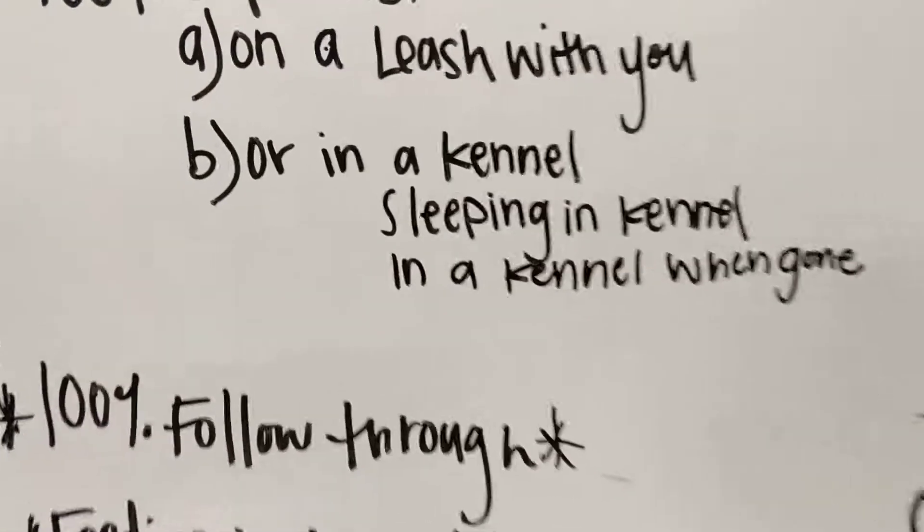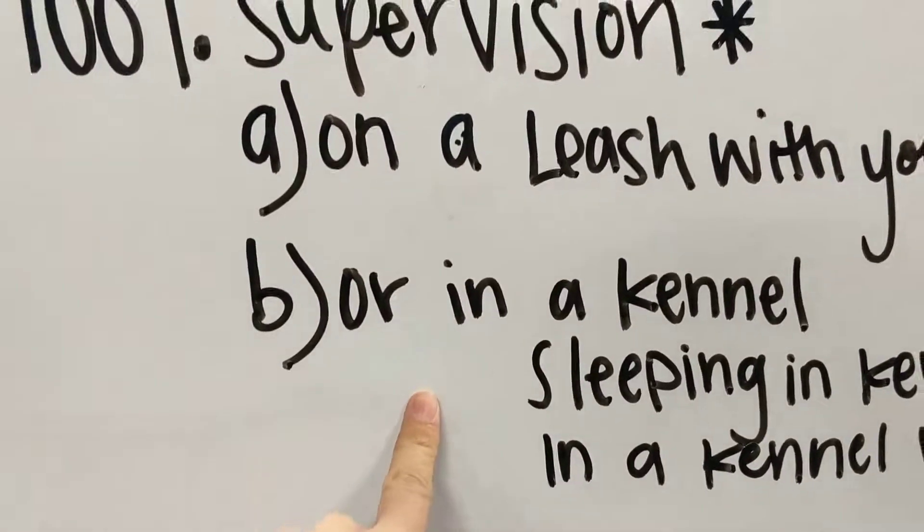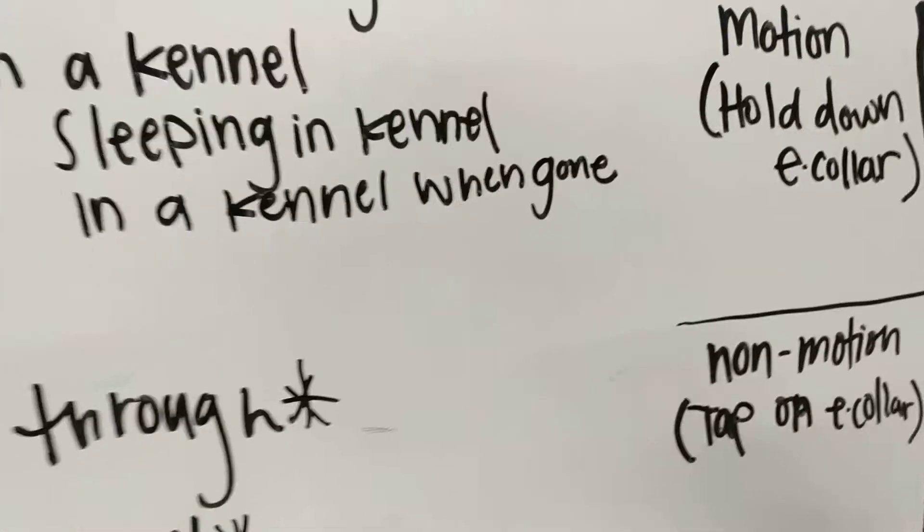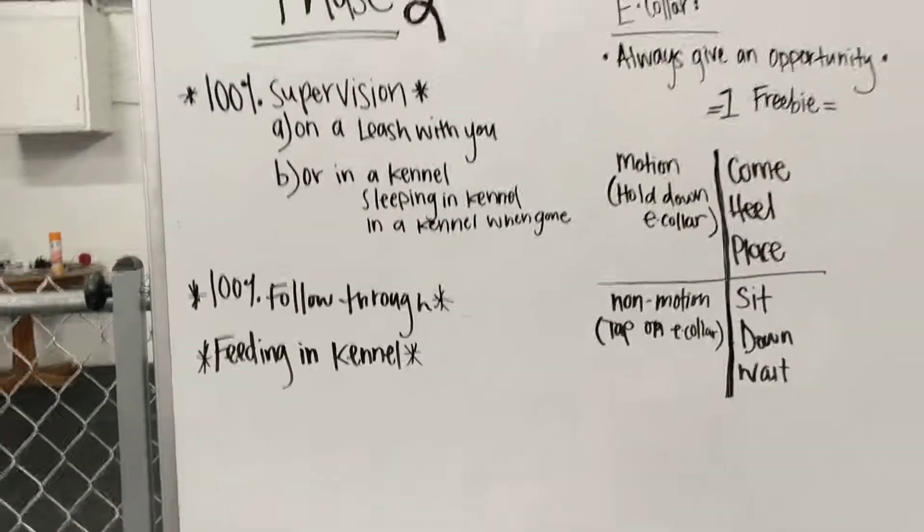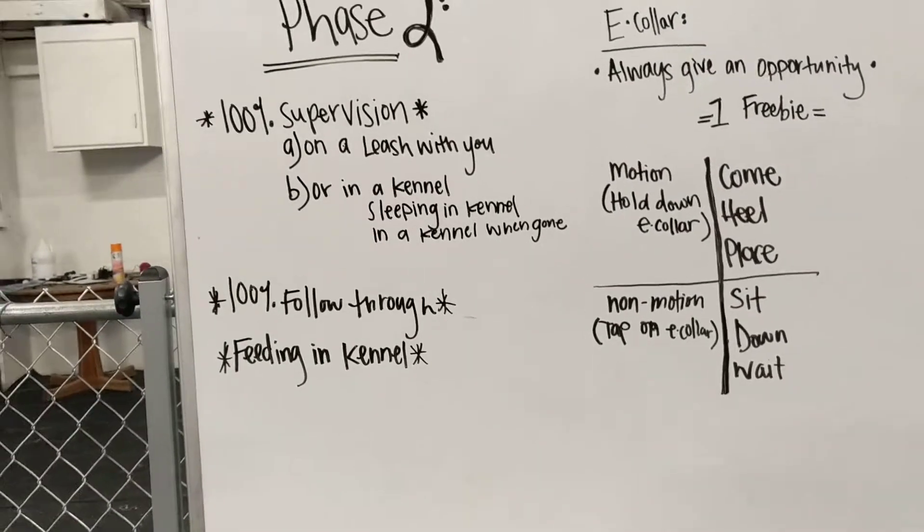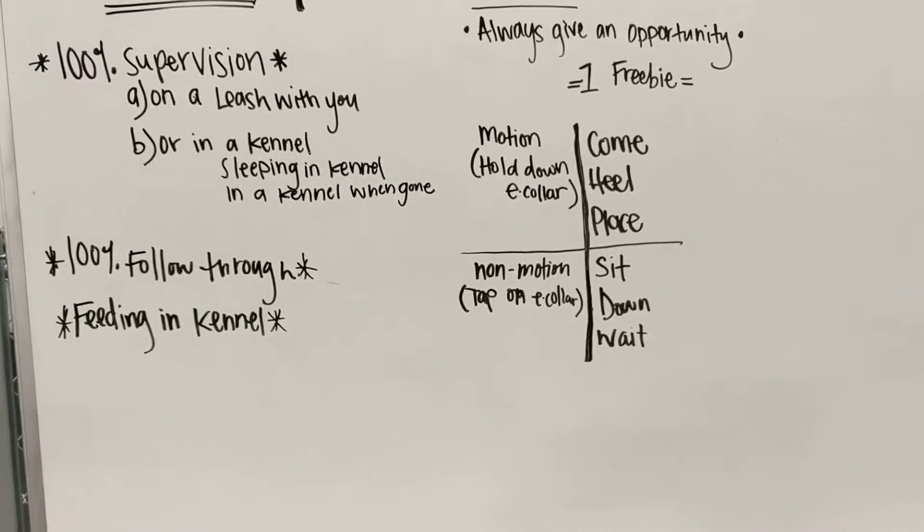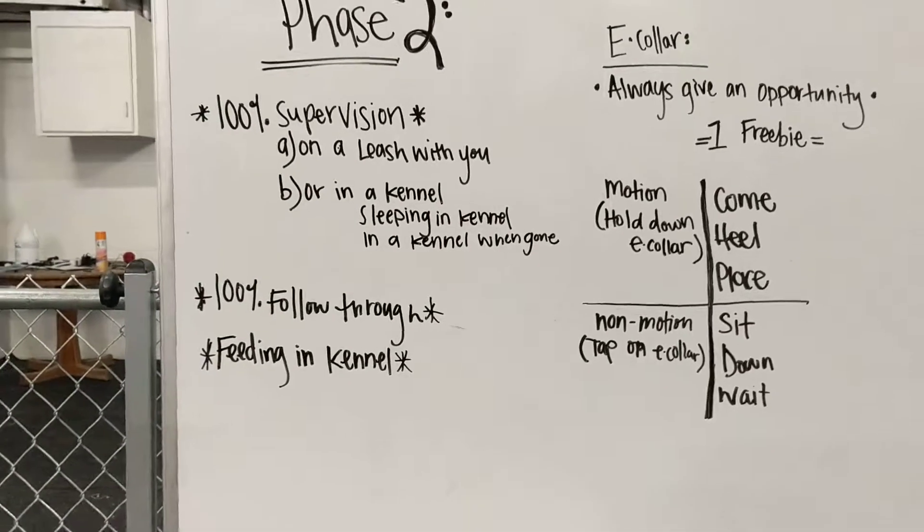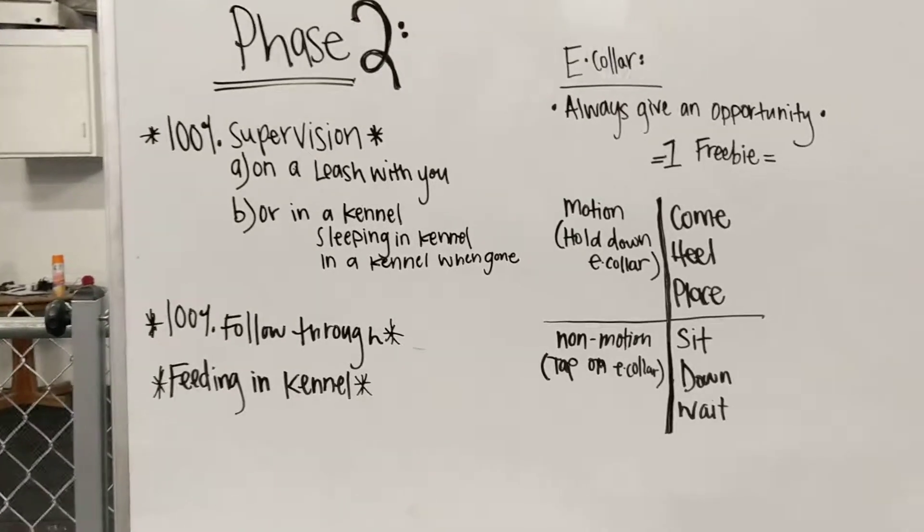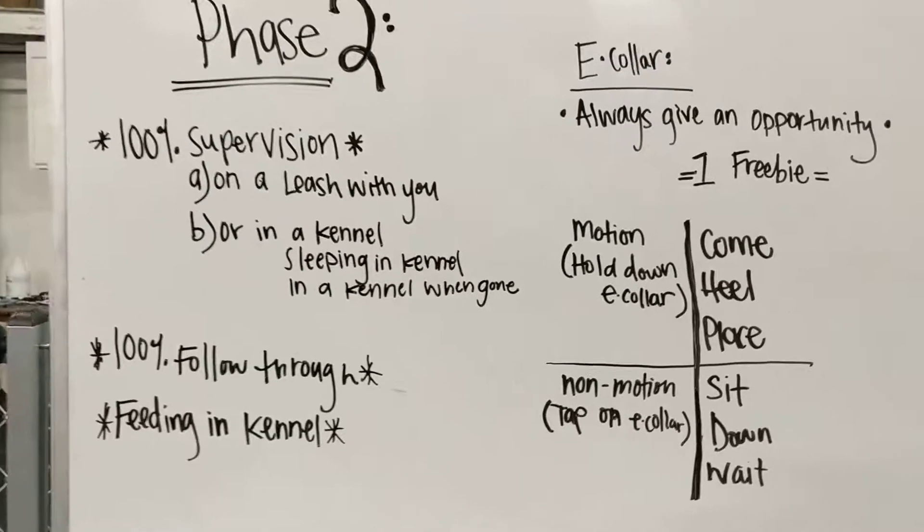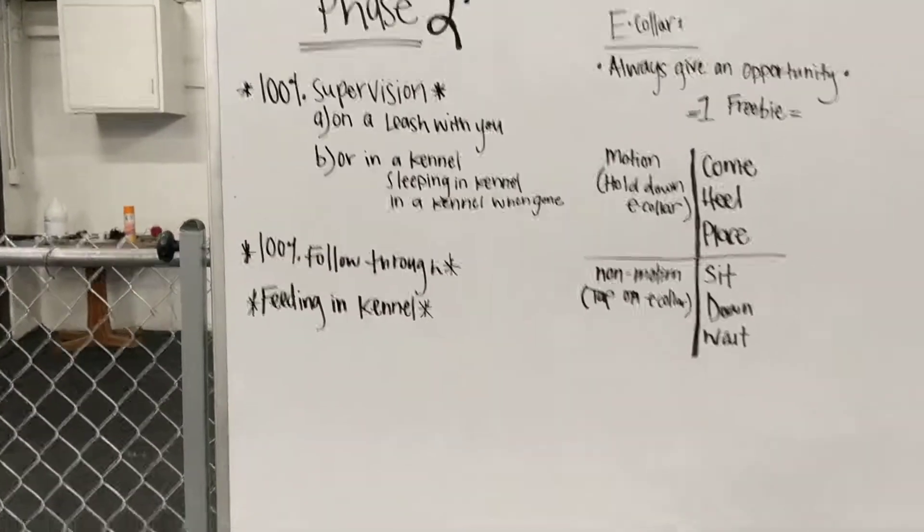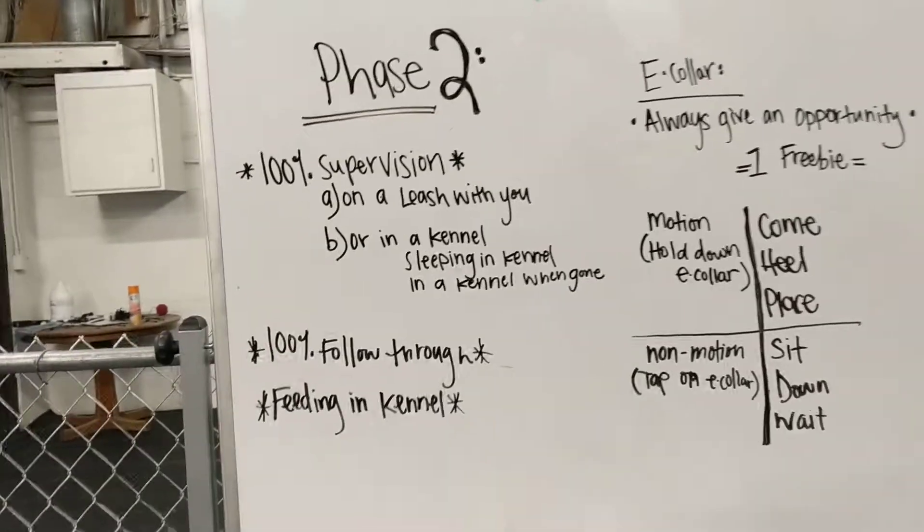We'll talk about that in a minute though. So second thing - if you're not there to be with him, he needs to be in a kennel. He needs to be sleeping in a kennel, in a kennel when you're gone. Okay. So if you don't have time for him at that moment, he's going to be in a crate. Now we're going to utilize our crate pretty heavily during this phase two. So it might seem really structured and kind of on doggy lockdown a little bit, but that's okay. Because in phase three, once we get past phase two, where they're doing everything they need to be doing, they're listening.